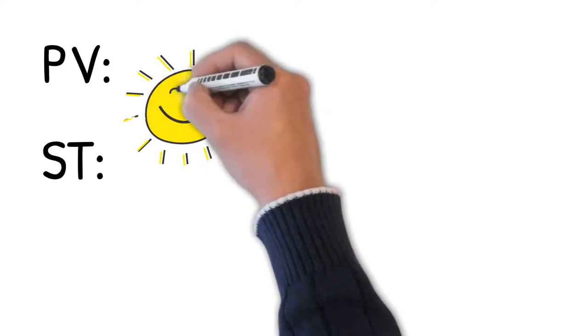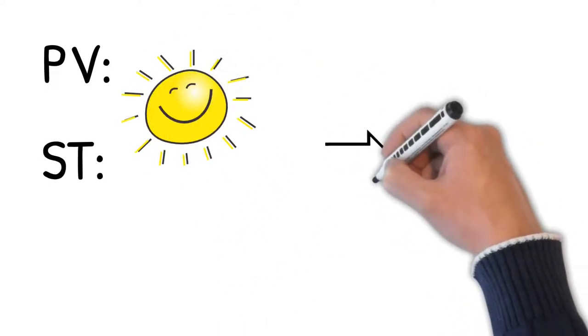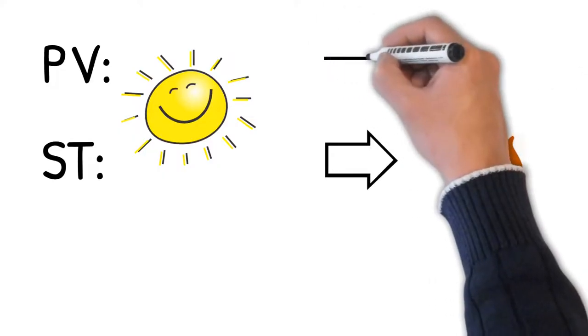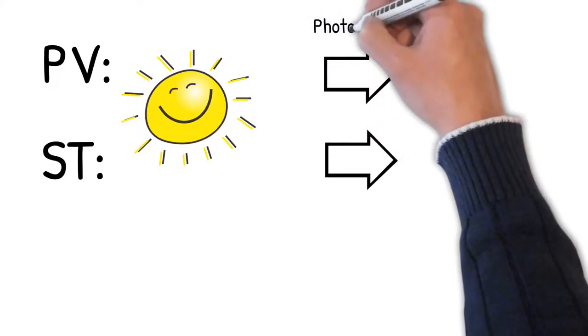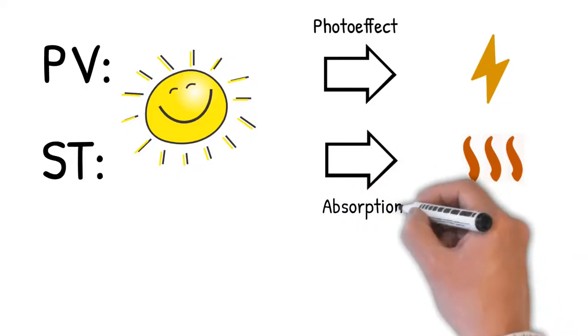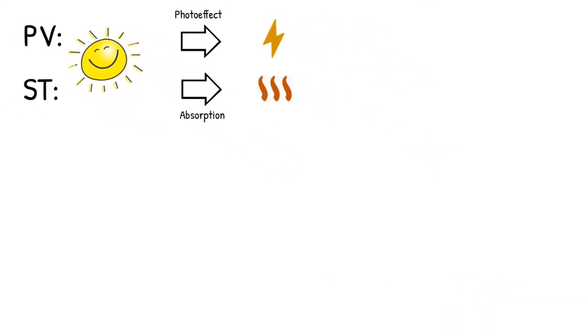Compared to photovoltaics, solar thermal energy does not convert the energy from sunlight directly into electrical energy, but into thermal energy. No complex effect like the photoelectric effect in photovoltaics is used for this. When light hits a solid body and is absorbed by it, heat is generated. We all feel this effect when we stand in the sun.